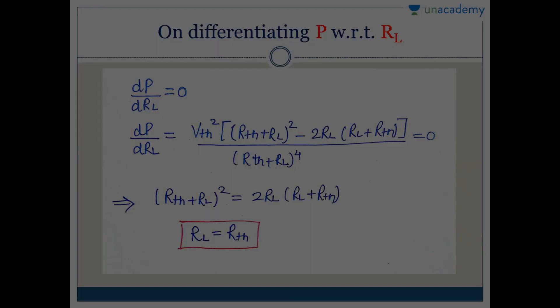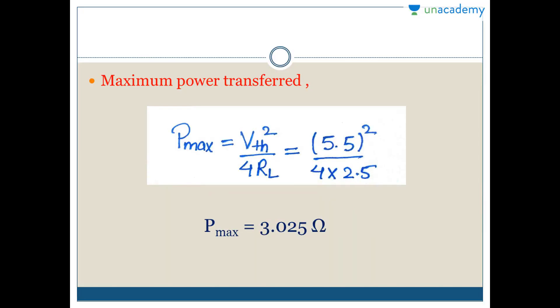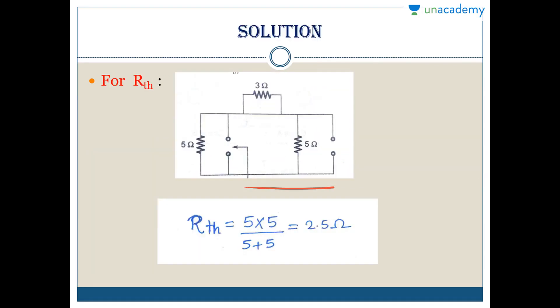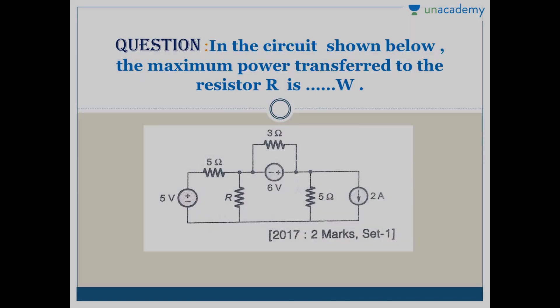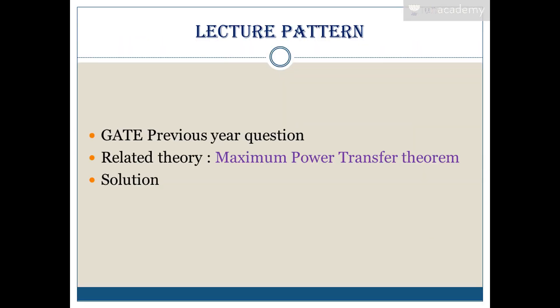The final expression you should know for maximum power transfer theorem for DC circuits: VTH squared divided by 4RL. In place of RL, you will put RTH. This is all about today's lecture. If you like the lecture, please write your comment in the comment box so I can know whether you liked this lecture or not. Thank you.